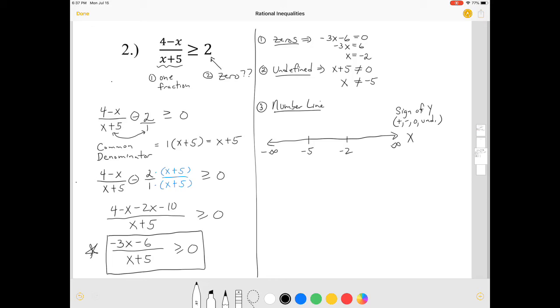So on top of the negative 5, that's where the function is undefined. On top of negative 2, that's, remember, a zero of the function. So the function has a sign of zero.